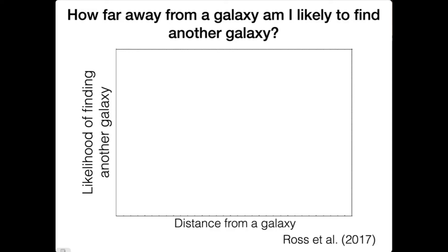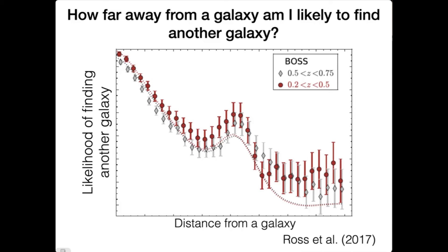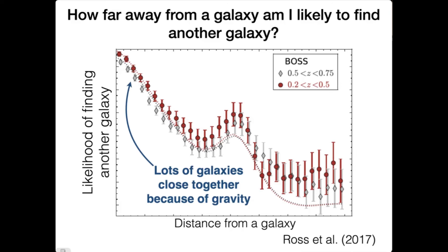How likely am I to find another galaxy 100 million light years away, 200 million light years away, and so on? And if you actually go out and make observations—make maps of where the galaxies are in our universe—and you actually compute this, what you find is a plot like this.